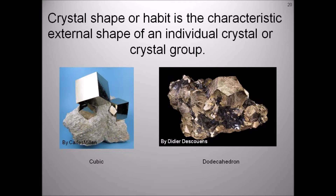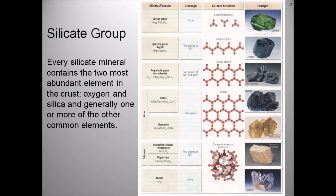Minerals are divided into two major classes: silicates and non-silicates. It is important to note that only eight elements make up most of the rock-forming minerals and represent more than 98% by weight of the continental crust. These eight elements in order of abundance from most to least are oxygen (46.6%), silicon (27.7%), aluminum (8.1%), iron (5.0%), calcium (3.6%), sodium (2.8%), potassium (2.6%), and magnesium (2.1%). Every silicate mineral contains the two most abundant elements in the crust, oxygen and silicon, and generally one or more of the other common elements.